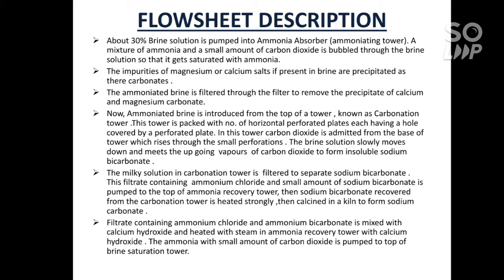The ammoniated brine is introduced from the top of the carbonation tower. This tower is packed with a number of horizontal perforated plates, each having holes covered by perforated plates. In this tower, carbon dioxide is emitted from the base of the tower and rises through small perforations. The brine solution slowly moves down and meets the up-going vapours of carbon dioxide to form insoluble sodium bicarbonate.